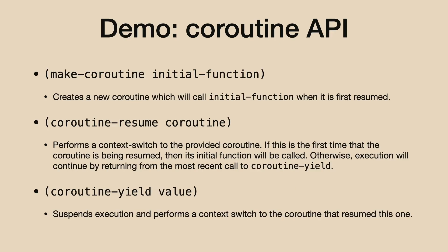Before I show the demo, I'll quickly talk about the API we've implemented. There are three functions. If you've ever written Lua, this is basically a rip-off of Lua's coroutine API. The first one is how you make coroutines: make-coroutine. We are implementing stackful coroutines — if you know the difference between stackful and stackless. So make-coroutine actually allocates a new stack.